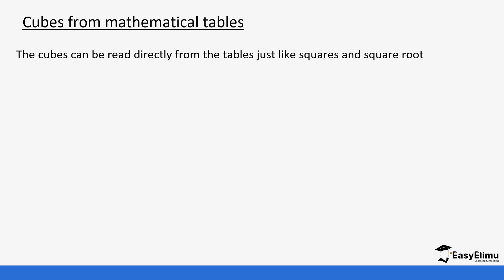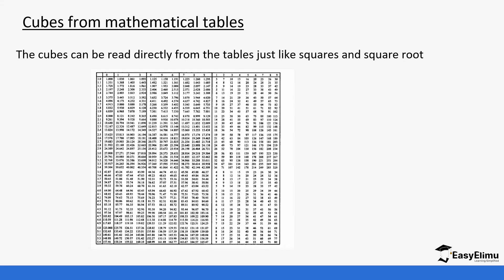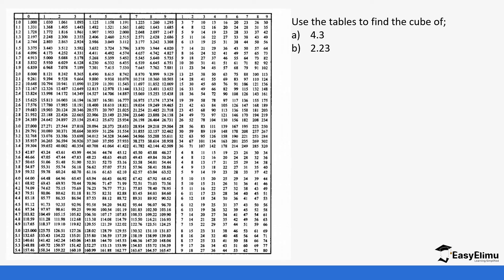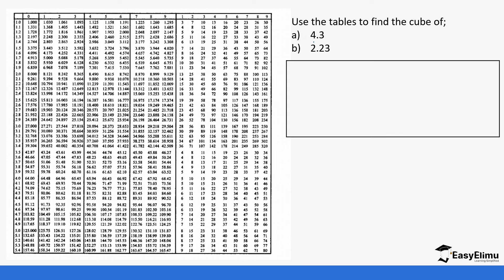Cubes can also be derived from mathematical tables, and we read them in the same way we read squares and square roots in form one. The table has different sections with numbers ranging from 0 to 9 for the second and third decimal places, plus an 'add' section. For example, to find the cube of 4.3 from the table, go to where 4.3 is. Since the next digit is 0, go down the column headed 0, and the value is 79.51.